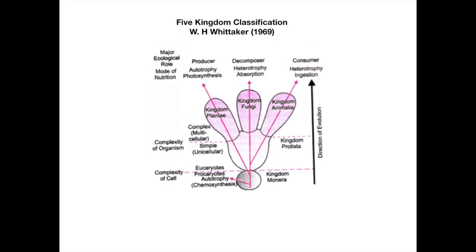The first criteria is the complexity of the cell — that means whether the cell is prokaryotic or eukaryotic, based on the presence of a nucleus within the cell. Prokaryotes lack a nucleus, whereas eukaryotes have a membrane-bound nucleus. Based on this criteria, prokaryotes are placed into kingdom Monera, and the eukaryotes are left out.